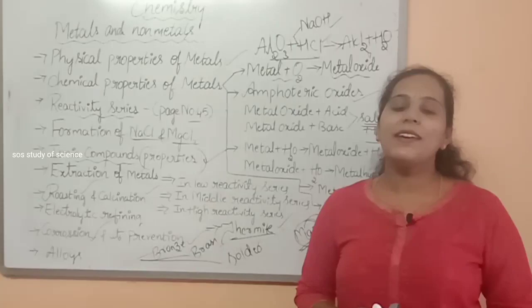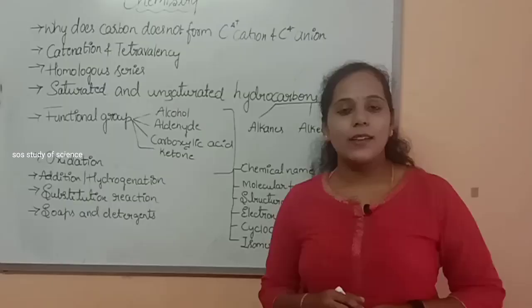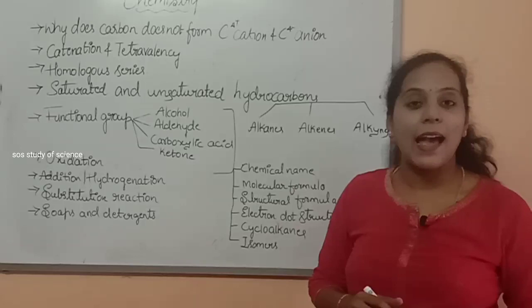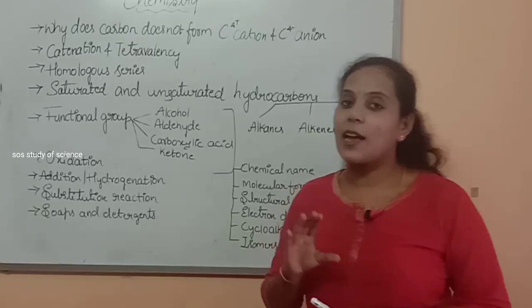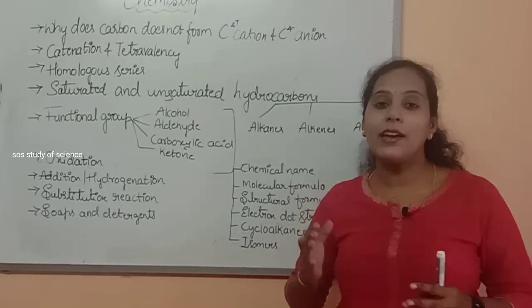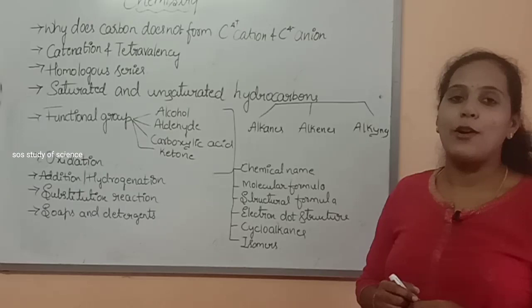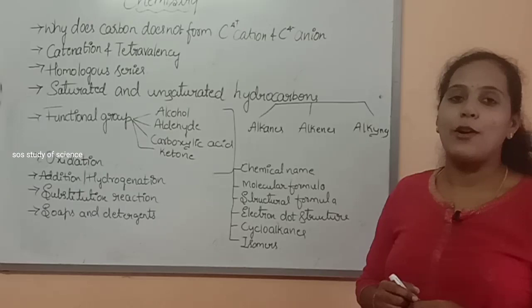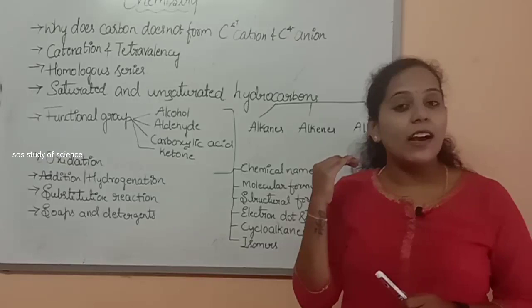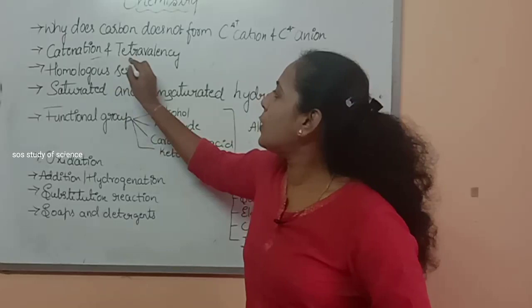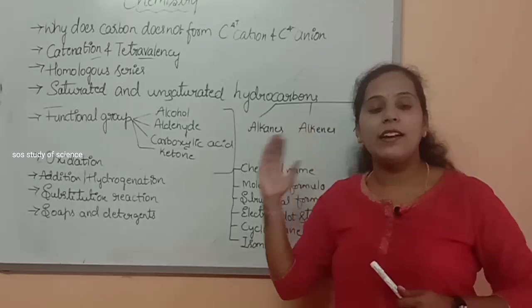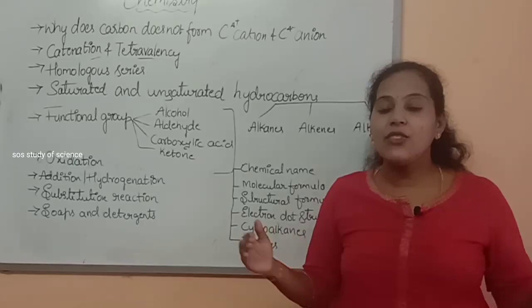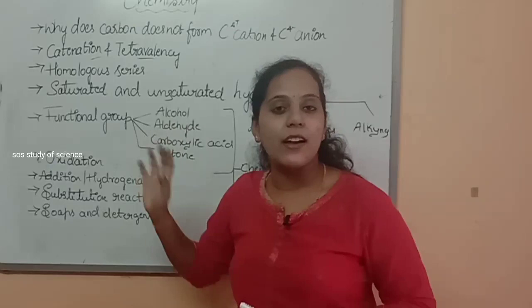Now I will explain the important concepts from the lesson carbon and its compounds. The first concept: why does carbon not form a C⁴⁺ cation or C⁴⁻ anion? The reason is that carbon has 4 valence electrons, and it is difficult for the nucleus to donate or receive 4 electrons. So carbon forms covalent bonds. This concept, found on the first or second page of your textbook, is often asked in examinations. Also learn catenation and tetravalency — because of these properties, carbon can form the longest chains: straight chain, branch chain, or cyclic chain.